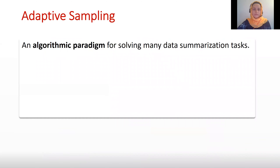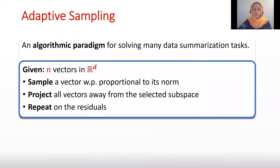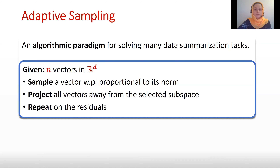So what is adaptive sampling? Adaptive sampling is an algorithmic paradigm for solving many data summarization tasks. In short, we are given a set of n vectors in a d-dimensional Euclidean space. Adaptive sampling at every iteration samples one vector with probability proportional to its norm or squared norm, and then it does so in an adaptive fashion — after sampling the first vector, it projects away all the remaining vectors onto the subspace orthogonal to what it has already picked, and then continues on the residuals.